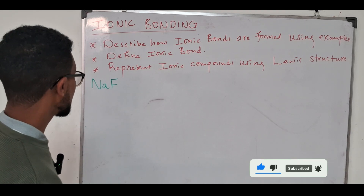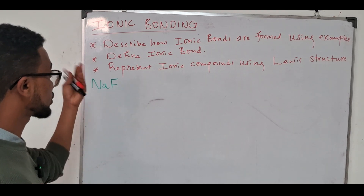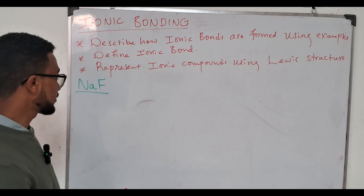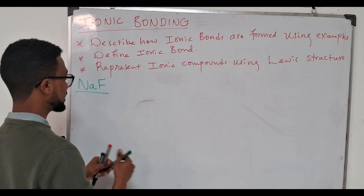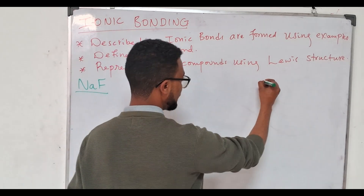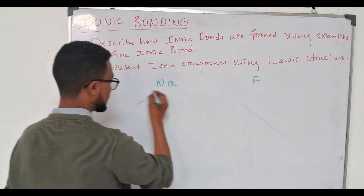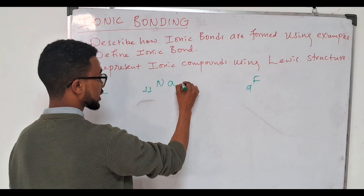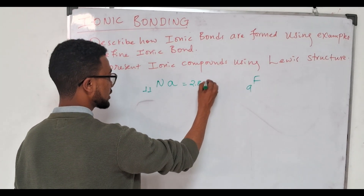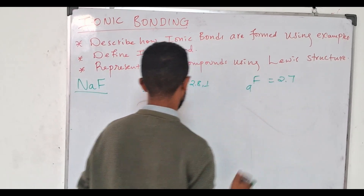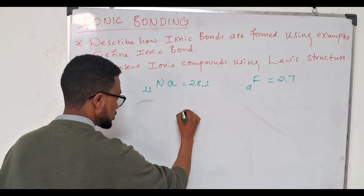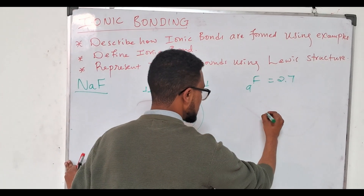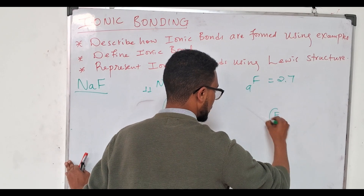To help us describe ionic bonding, let's use sodium fluoride as an example. Let's begin by writing sodium and fluorine separately. Sodium has 11 electrons and fluorine has 9 electrons. The electron configuration for sodium will be 2, 8, 1 and for fluorine it will be 2, 7.